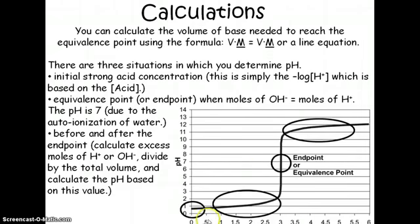And then before the end point and after the end point, so there and there, you could calculate the pH by calculating the moles of excess H plus or excess OH minus ions divided by the total volume at that point. And then that would be your concentration of H pluses and then you could negative log that to get the pH. So those are the things we're going to need to do to get us a titration curve.